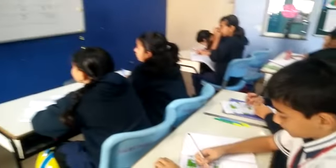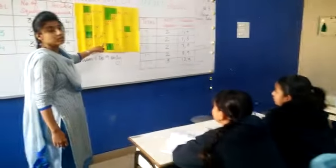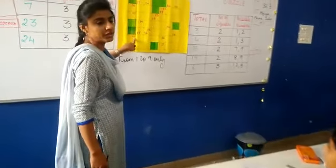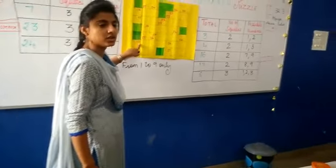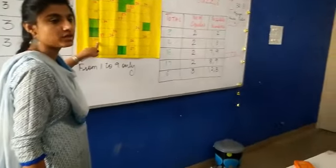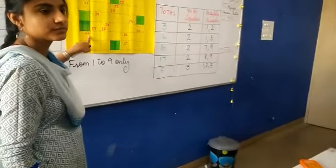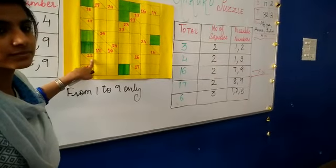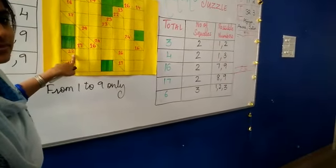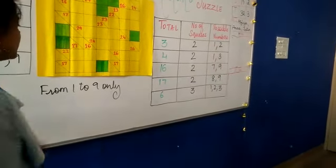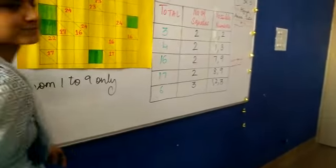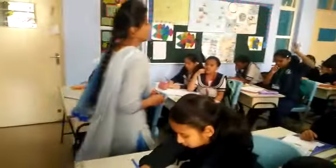So 6 plus 7 gives you 13. And this is 22. So 22 minus 13 will give you how much? 9. So here comes your 9. Thank you.